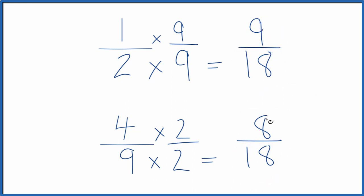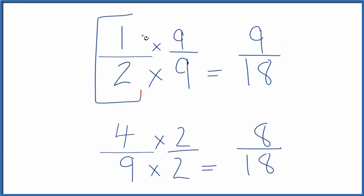Since nine is larger than eight, one-half, that's going to be the larger fraction. It's going to be larger than four-ninths. So that's how you do it.